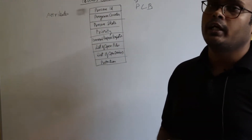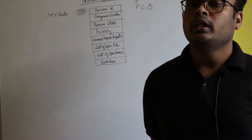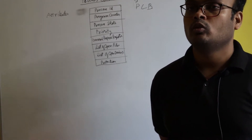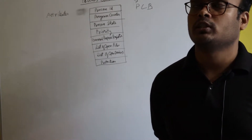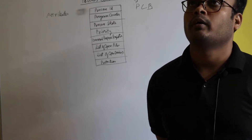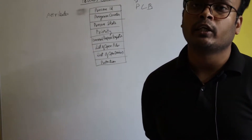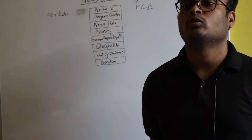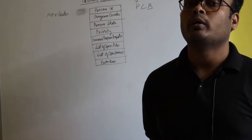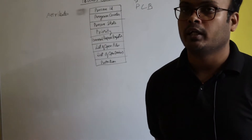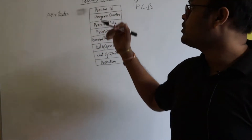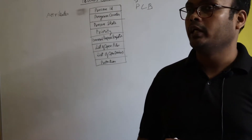The first attribute is process ID. Each process has its own ID number through which you can identify that process. For example, each of us has a social security number, also known as Aadhar number, through which you can be easily identified as a citizen of India. Similarly, each process has its own process ID.